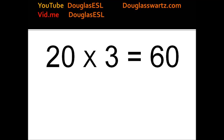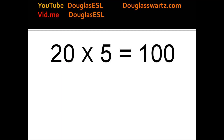20 times 3 equals 60. 20 times 4 equals 80. 20 times 5 equals 100. 20 times 6 equals 120.